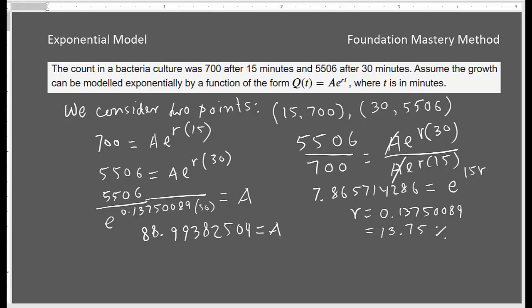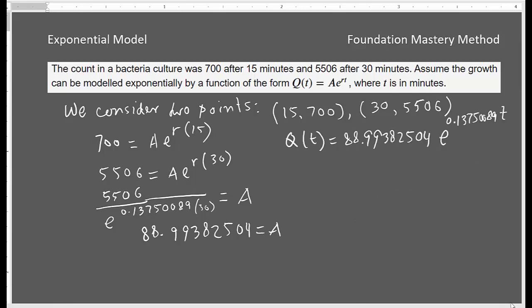So the model is now Q(t) = 88.99382504 · e^(0.13750089t). So this is our r here, the rate. Now we can ask more questions and then see how do we simplify.